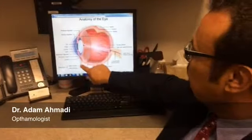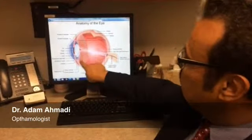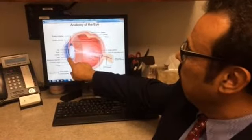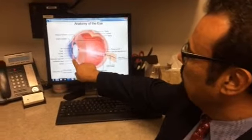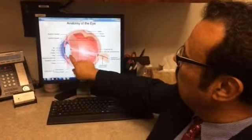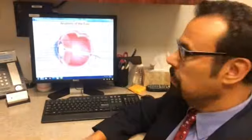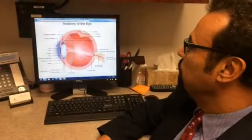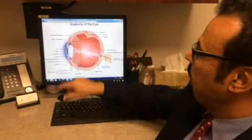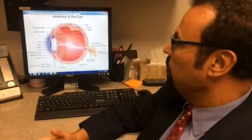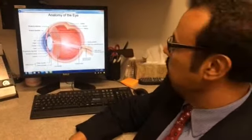A cataract is the cloudiness of the lens that we all have inside our eye, and it sits behind the colored part of the eye called the iris. That lens is nice and clear when we're young, and it gets cloudy as we age. That's the number one risk factor or reason people develop cataracts—advancing age.